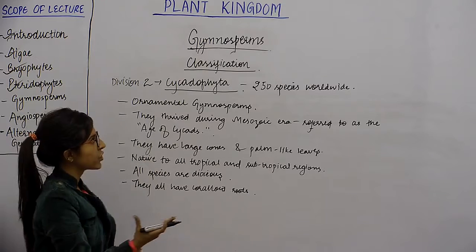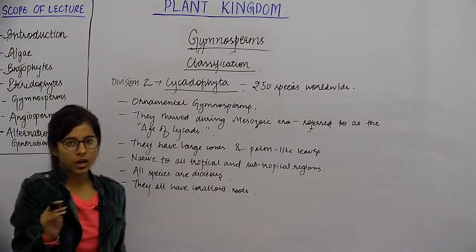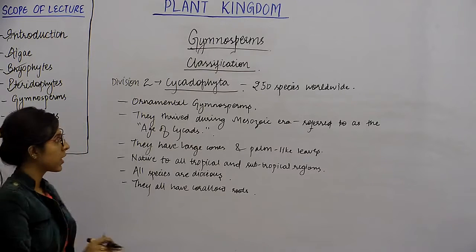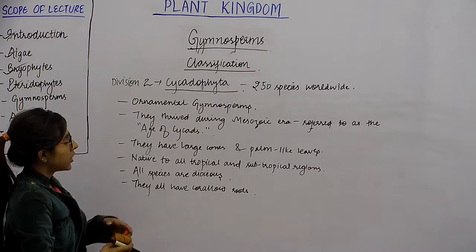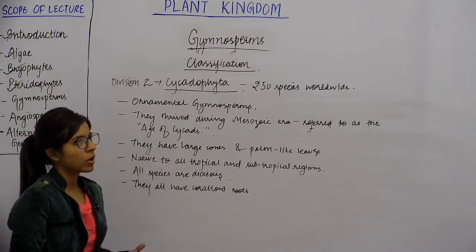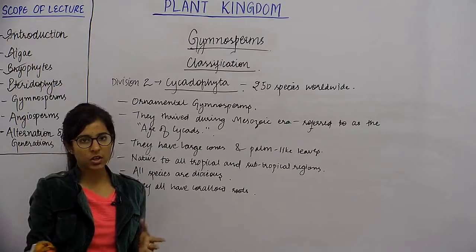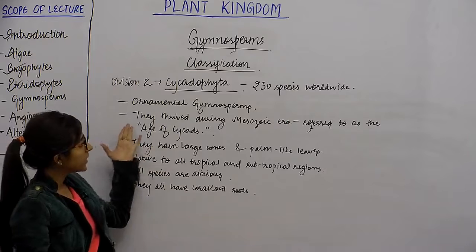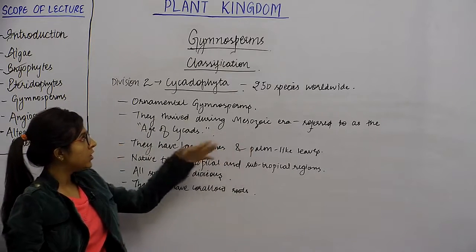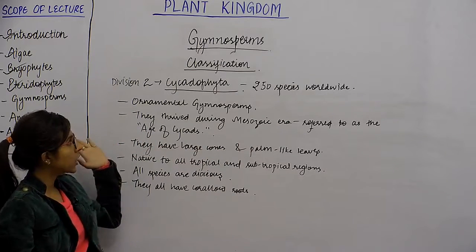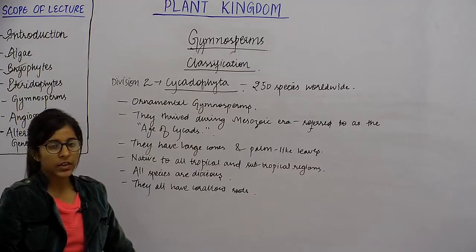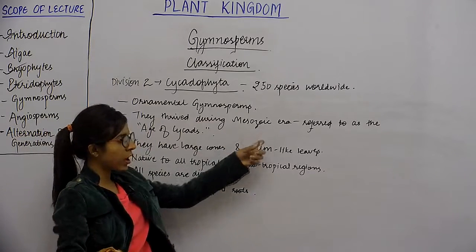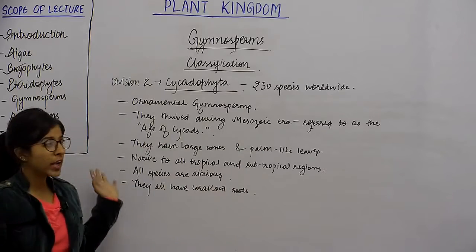This is about the division Cycadophyta. Today there are 250 living species. These are usually ornamental Gymnosperms, meaning they are primarily decorative and do not have many other uses. They thrived during the Mesozoic era. Ginkgophyta came in the Triassic period, while Cycadophyta flourished during the Mesozoic era — that is why the Mesozoic era is called the Age of Cycads.